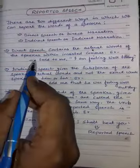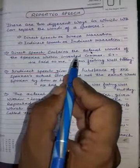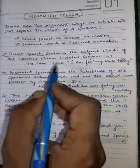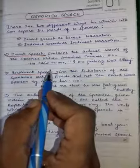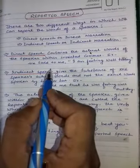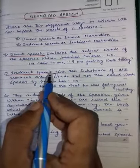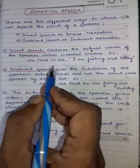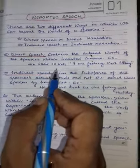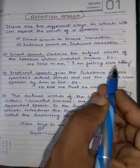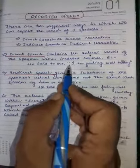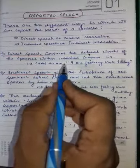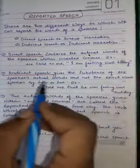What is Direct Speech? Direct Speech contains the actual words of the speaker within inverted commas — when the speaker's exact words are quoted in inverted commas, this is Direct Speech. For example: he said to me, 'I am feeling well today.' Look here — the statement is in inverted commas.